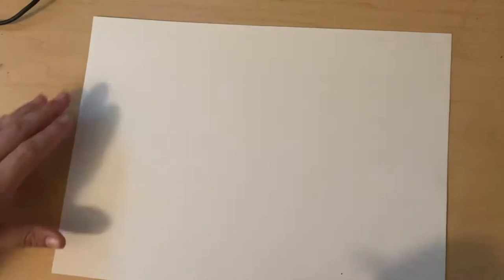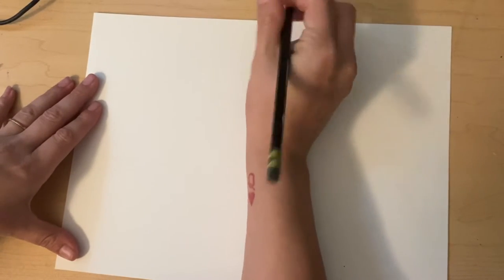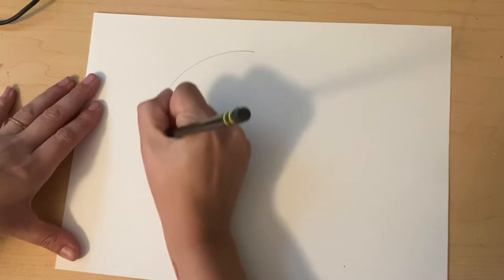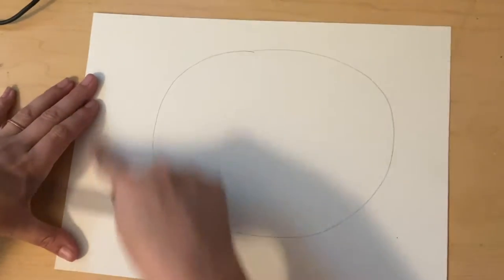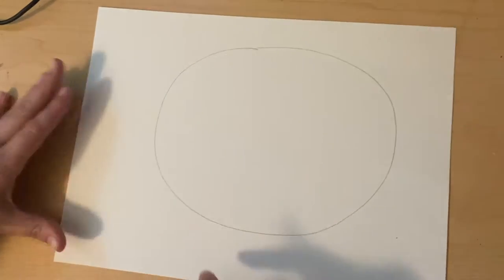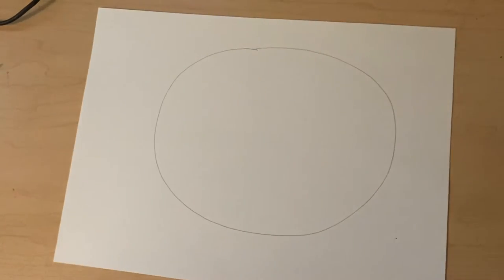The first thing I'm going to do is draw a big circle. I want it to take up a good amount of space on my paper but not the entire space. I want to have some room around the edges. It's okay if it's not perfectly in the center. It's okay if it's a little wobbly and not a perfect circle. We're just going to make this work for us.